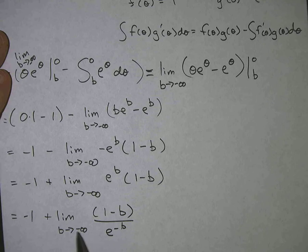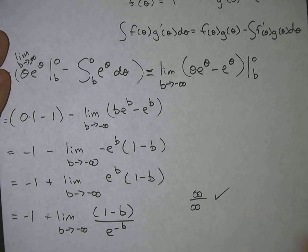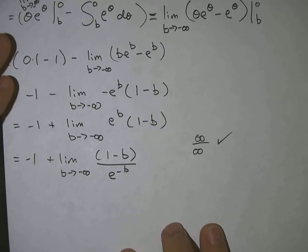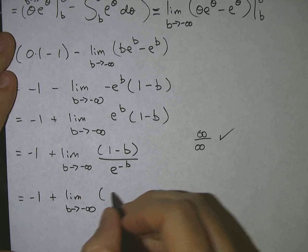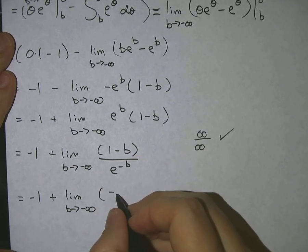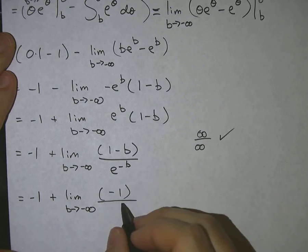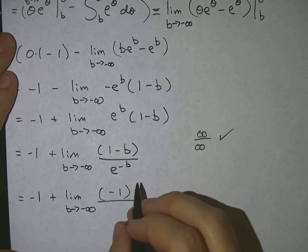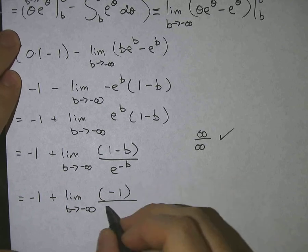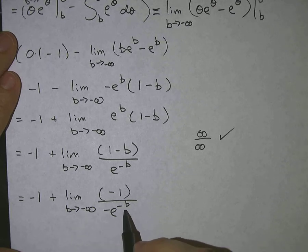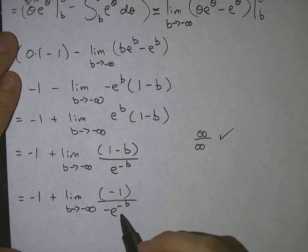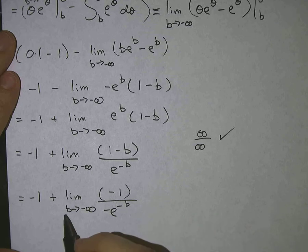Now when I plug in negative infinity, I get infinity over infinity, which is the right form for L'Hôpital's rule. L'Hôpital's rule says take the derivative of the top and the derivative of the bottom, then re-evaluate the limit. So the limit as b approaches negative infinity: the top becomes negative one, and the bottom — taking the derivative — becomes negative e to the negative b. Plugging in negative infinity, the bottom becomes infinitely large in the negative direction, but still infinite. Since the bottom is getting infinitely large and the top is a constant, this whole thing goes to zero.